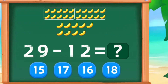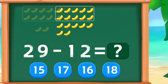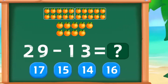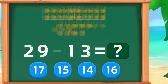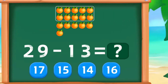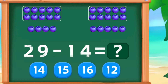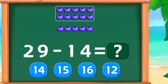29 minus 12 is 17. Excellent. 29 minus 13 is 16. Nice. 29 minus 14 is 15. Wonderful.